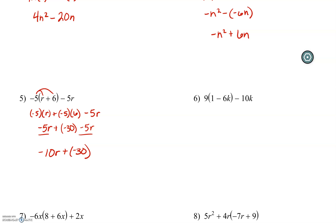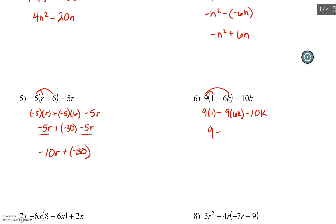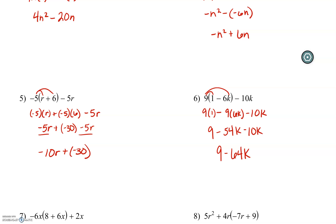Number 6: we're going to multiply this 9 through the parentheses — 9 times 1, minus 9 times 6k. Notice that the negative 10k is outside the parentheses, so it's not being multiplied to anything. Multiply and simplify: 9 times 1 is 9, minus 9 times 6k would be 54k, minus 10k. 54k and 10k are like terms — they both have a k — so we can combine them: negative 54k plus negative 10k would be negative 64k. We can't combine 64k and 9 together, so that is our final answer.